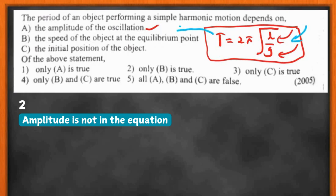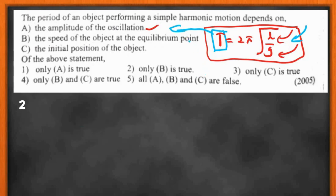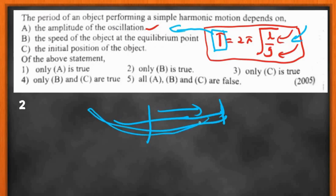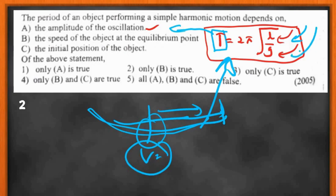If you think without the equation, you have no idea whether amplitude matters — you might imagine that a larger amplitude means higher speed and a shorter period. But the real physics is in the equation. The second statement mentions the speed of the object at the equilibrium point — velocity is not in the period equation. The third mentions the initial position — also not there. So all three statements are false.